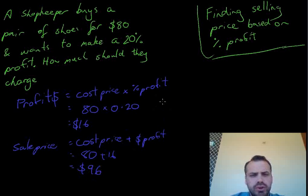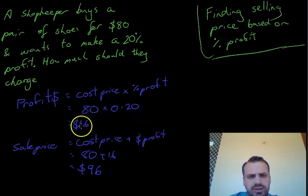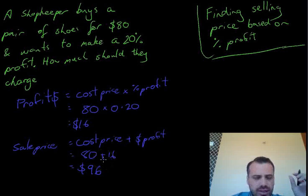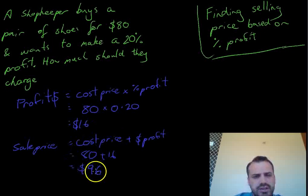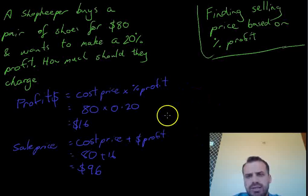This is very, very real world. It's exactly what happens in the real world. Go and buy a pair of shoes for $80. You want to make a 20% profit. So you figure that out, that you need to make $16. So on the sticker in the shop, you'll put 80 plus 16, which is $96. Buy your shoes for 80, sell them for 96, and you'll be a happy shopkeeper. That's finding the selling price based on the percentage profit.